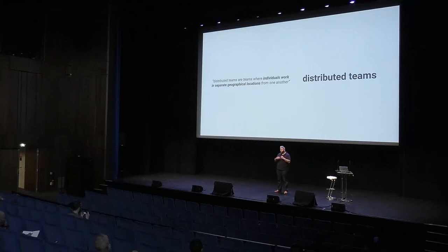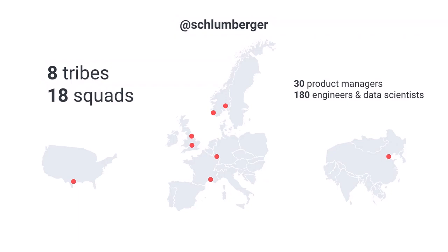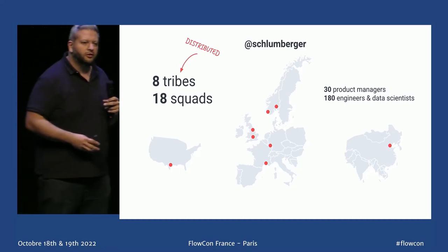I'll give you two examples. The first is from my previous company, Schlumberger — the biggest oil and gas service company in the world, with one of the biggest software departments in the energy space: more than 300 product managers, more than 5,000 developers. The team I was in charge of was composed of eight tribes, 18 squads across countries — mostly in Europe: Norway, UK, France, Germany — and a team in Houston and a team in Beijing. So 30 product managers, 180 engineers, eight tribes, 18 squads. Eight tribes fully distributed, different countries, different locations, working quite well. But within each tribe, the squads were co-located — a historical choice based on how we were developing software.